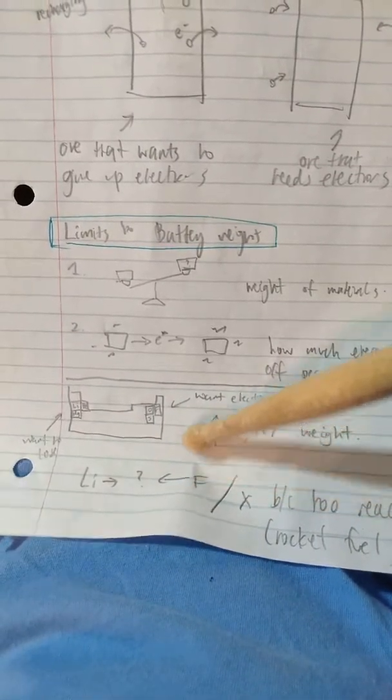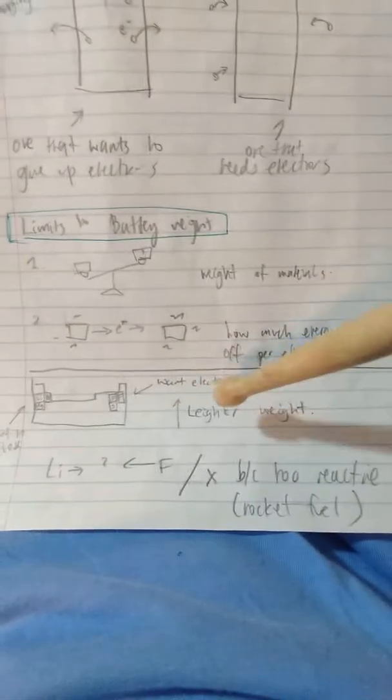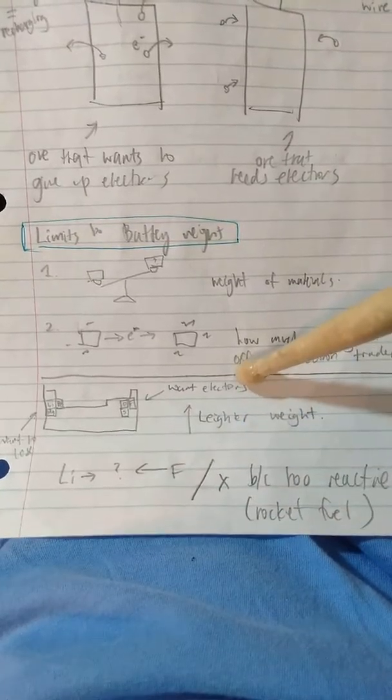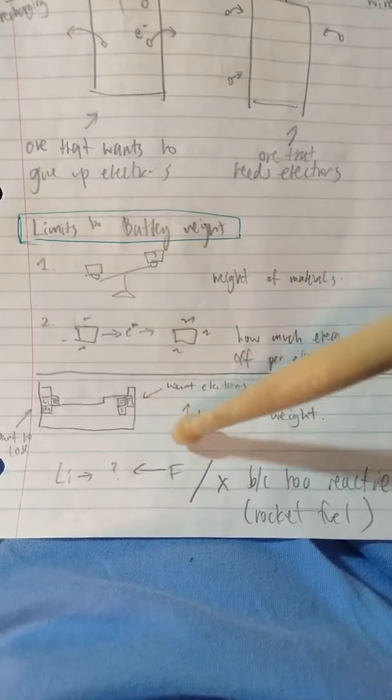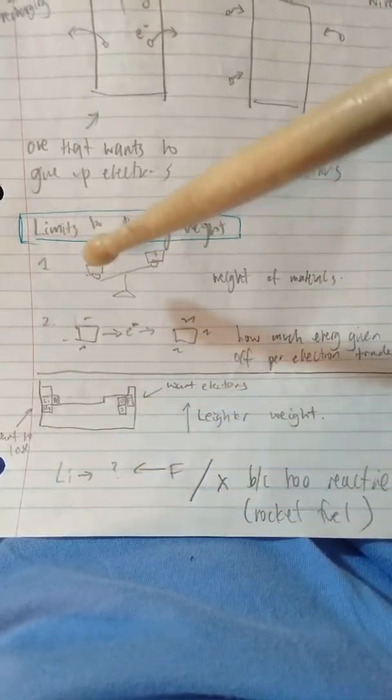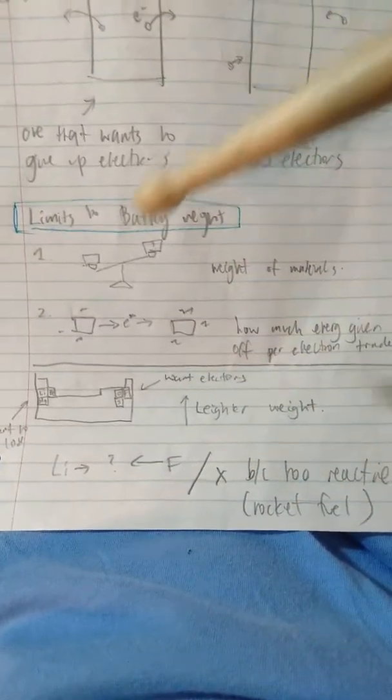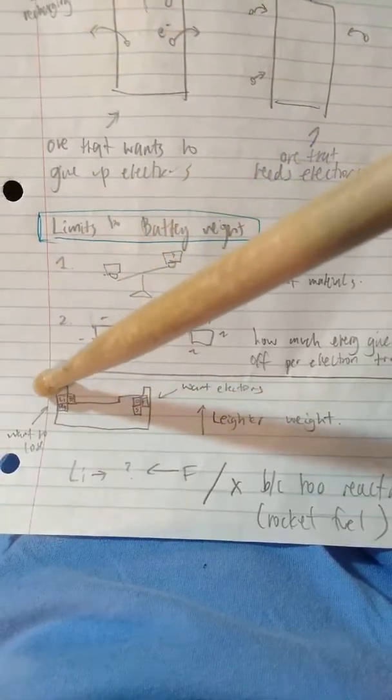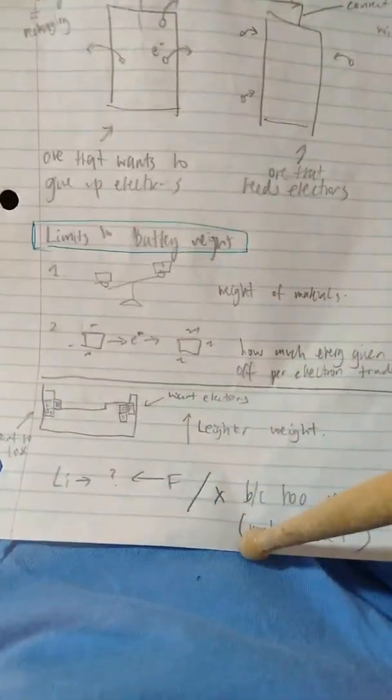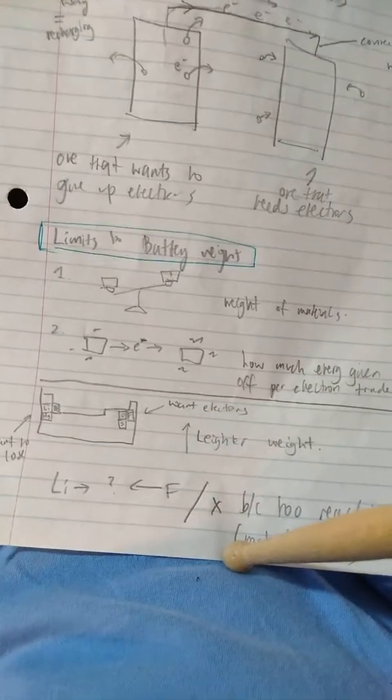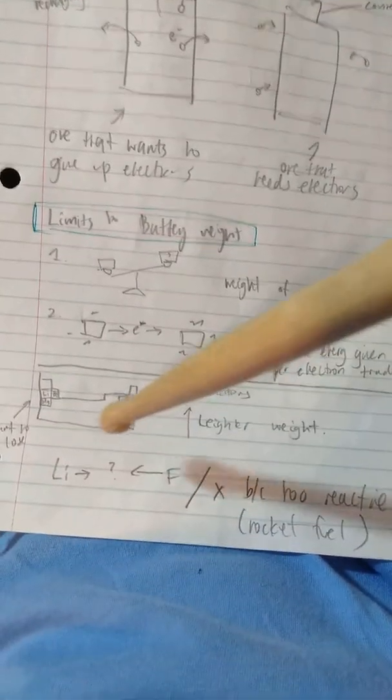As it goes up, there's lighter weights because there's less shielding electrons and fewer layers. So as you go up the periodic table, it's lighter. If you think about it, lithium and fluorine combined will be the most reactive and most efficient in transferring energy.